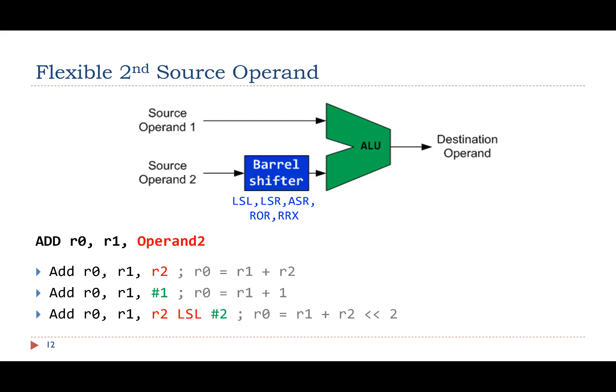As shown in this figure, the second source operand can optionally use the barrel shifter, which is a digital circuit that can efficiently perform these five shift or rotate operations. The barrel shifter can shift or rotate a register by any specified number of bits in one clock cycle.